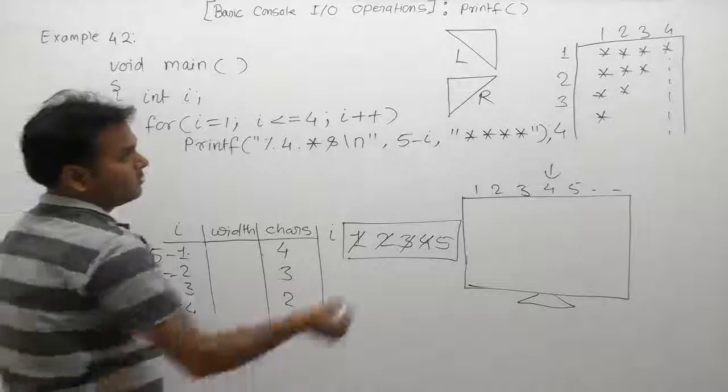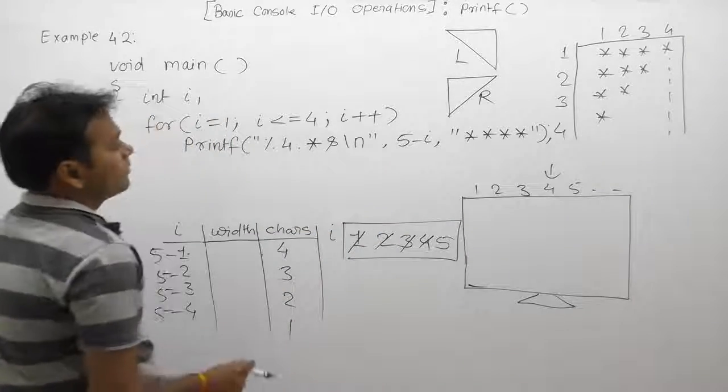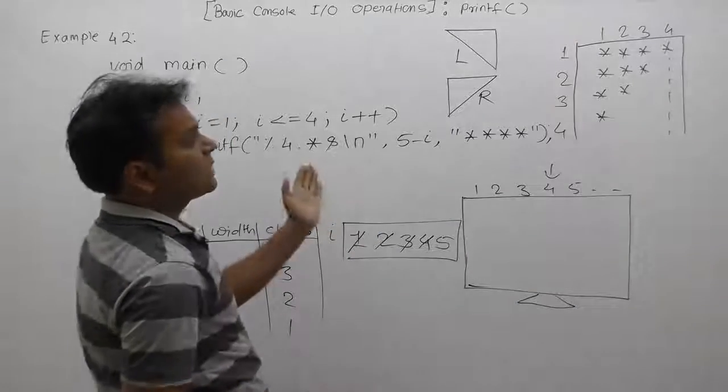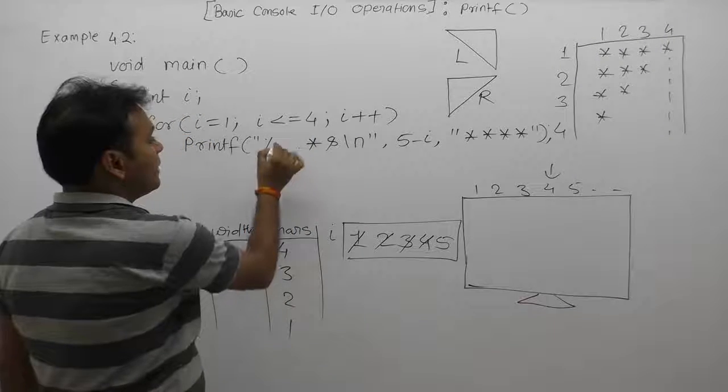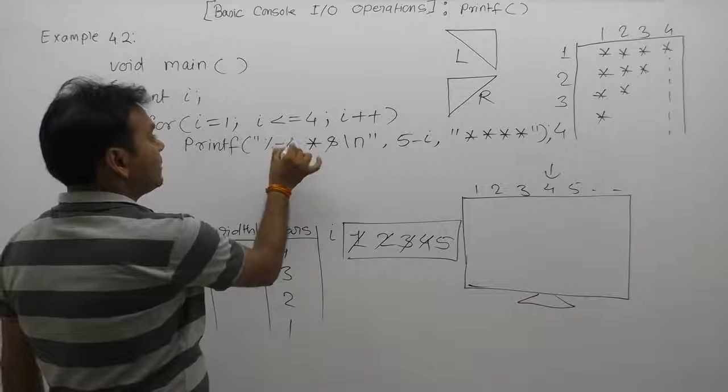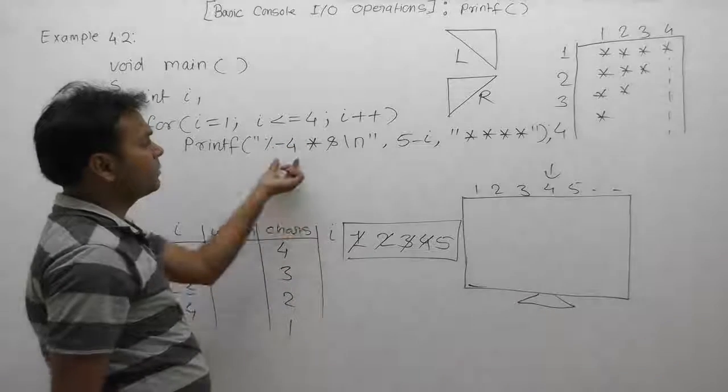We only want to transfer to the right position, therefore we are writing exactly the same case, accepting that one. Again we are taking the width value as 4, but followed by a minus sign.